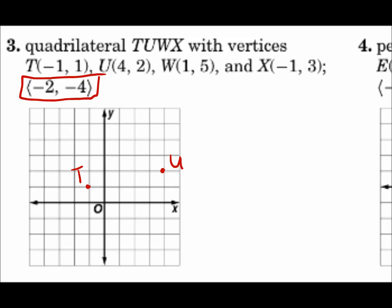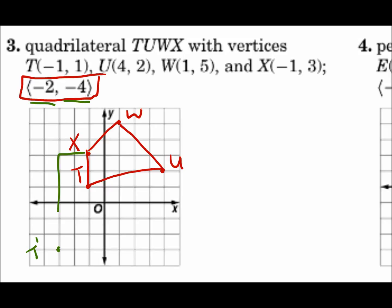Each point in this quadrilateral will be translated negative 2, which is 2 to the left, and negative 4, which is 4 down. T is at (-1, 1), U is at (4, 2), W is at (1, 5), X is at (-1, 3). Now each point goes 2 to the left and 4 down. T goes 2 to the left and 4 down to T prime. X goes 2 to the left and 4 down to X prime.